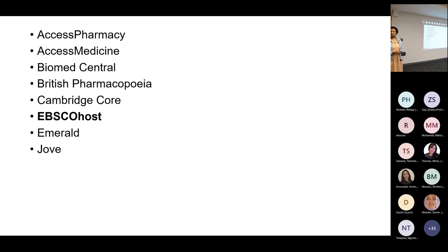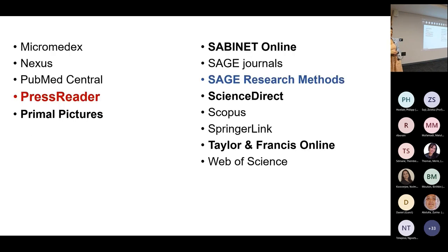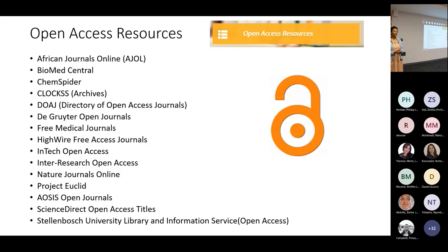I've put up the particular databases for the health sciences: Access Pharmacy, Access Medicine, EBSCO, Micromedics, and Nexus. Nexus is where you will be able to look at other institutional research as well — if you are looking to see what research has been done at other institutions, Nexus is the database you can use. We also have a very important one, which is Sage Research Methods for Postgrad. We also have open access resources you can make use of.